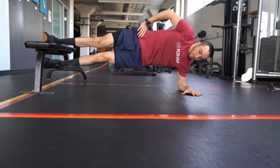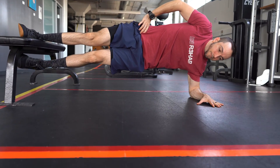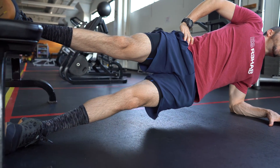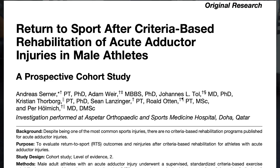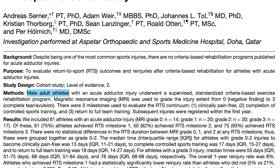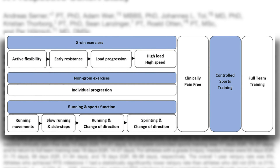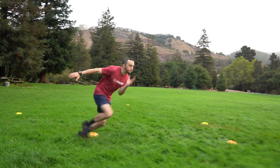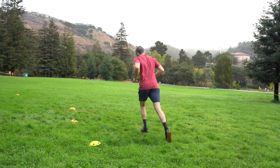Understanding the function of the adductors is important since it influences exercise selection. The exercise progressions I'm going to review today are adopted from a 2020 article by Cerner and colleagues. The authors developed a rehabilitation program for elite male athletes looking to return to sport following an adductor injury. The key components include a groin-specific exercise protocol and a return to running protocol, as well as sport-specific controlled training as a prerequisite for return to sport — though I will not be reviewing that today.